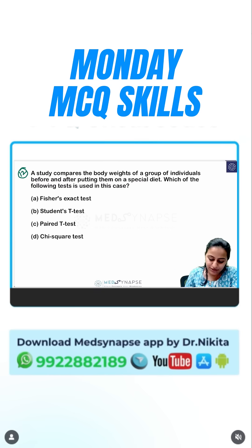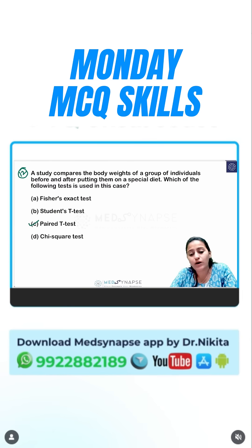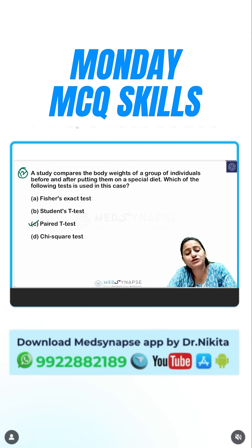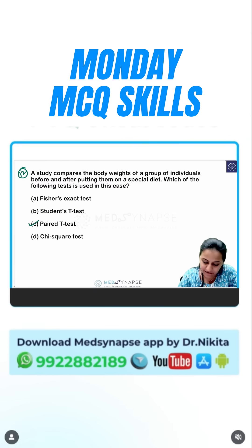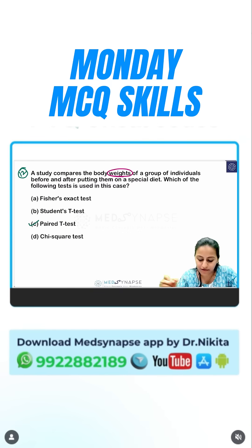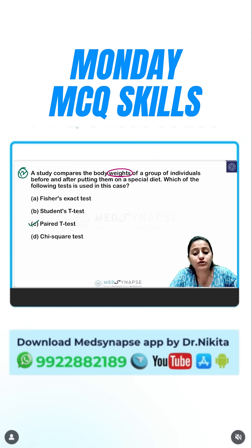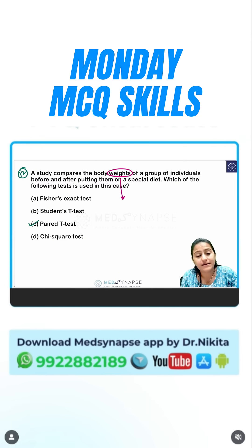The correct answer here is a paired t-test. What option do you rule out first? Look at the parameter being considered in the question. A study compares the body weight of a group of individuals. Is weight qualitative or quantitative? That is what you have to decide first.